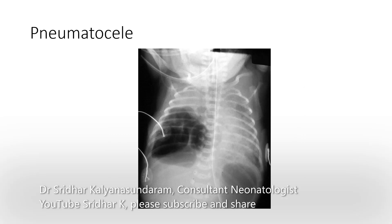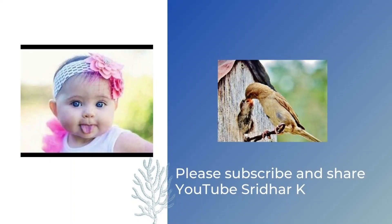Pneumatocele is a complication of some forms of infection like staphylococcal pneumonia. It can also happen related to pulmonary interstitial emphysema, where one area of the lung starts expanding more. A close differential diagnosis would be pulmonary lobar emphysema.